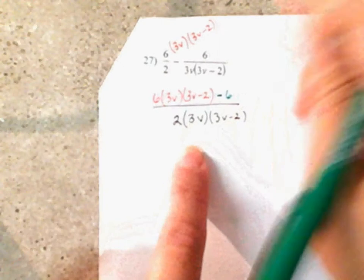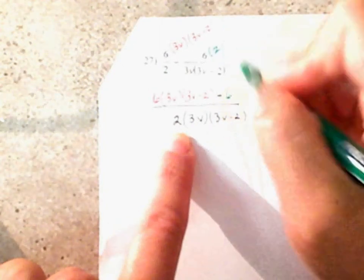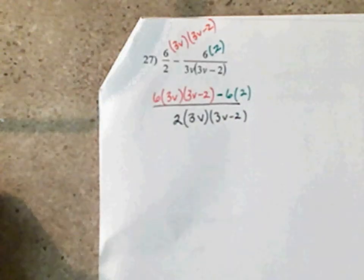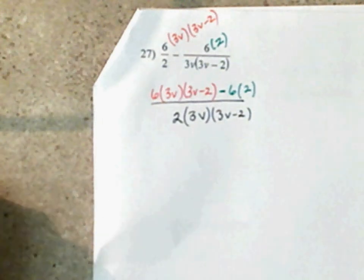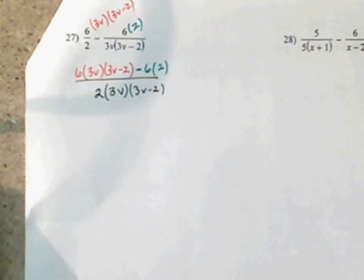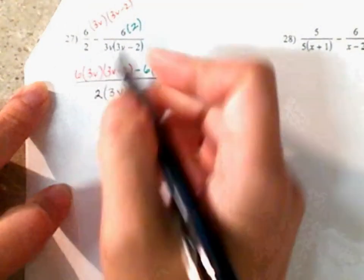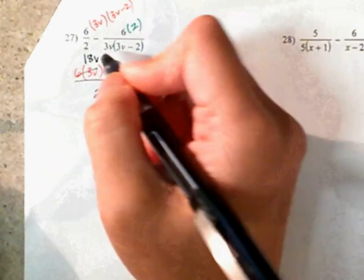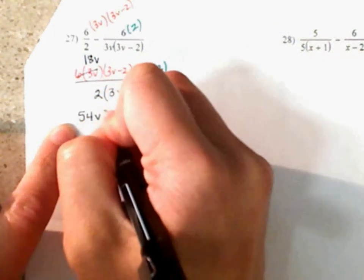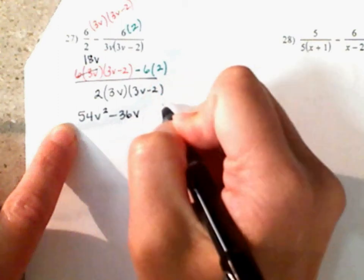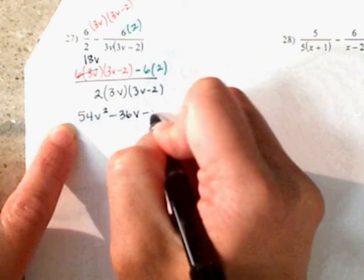Minus 6 — what are you missing from this denominator? A 2. So I'm going to multiply this 6 times a 2. Now we're going to combine like terms and simplify and all that good stuff. 6 times 3V is 18V. 18 times 3 is 54V squared. 18V times negative 2 is negative 36V. Negative 6 times 2 is negative 12.